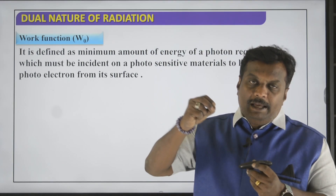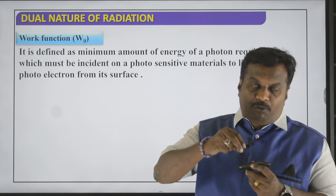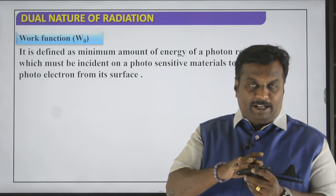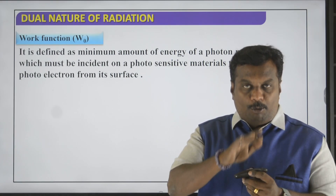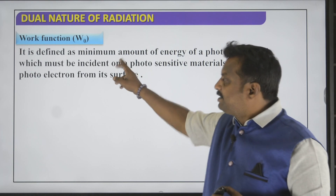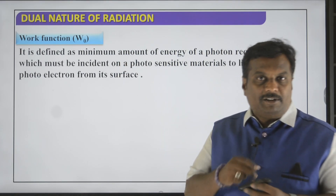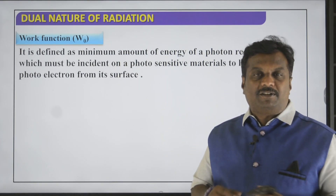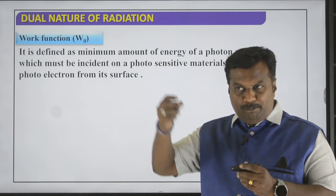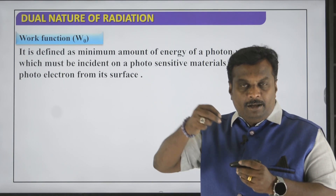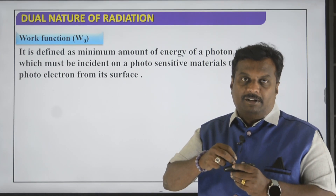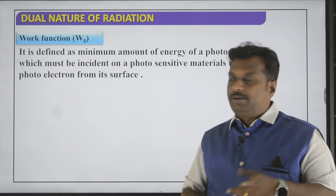It is a metal surface. The minimum energy for a photon in the metal surface — that minimum energy is the work function. In the metal surface, the minimum energy of a photon is called the work function.